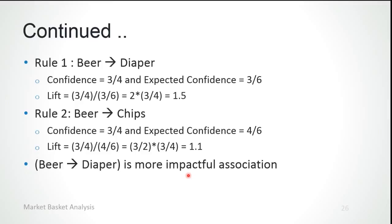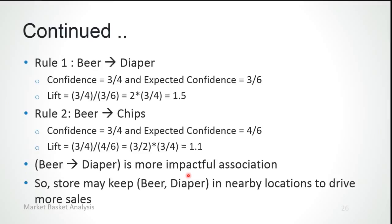Now, what can the store do with this information? Since beer and diaper is the more impactful association, the store may keep beer and diaper in nearby locations to drive more sales.